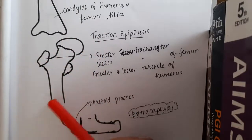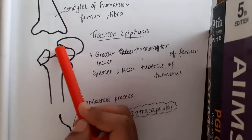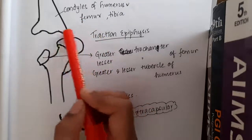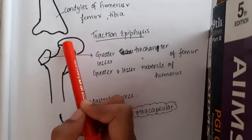See, this is the femur. So, in the femur, this is the head of the femur and this head of the femur is involved in the articulation with the hip bone and this head of femur is pressure epiphysis.